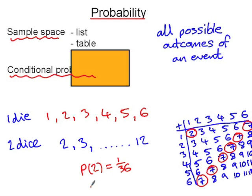So that's why when you're working with two events, in this case two dice, a table is a more effective and a more efficient way of listing the sample space.